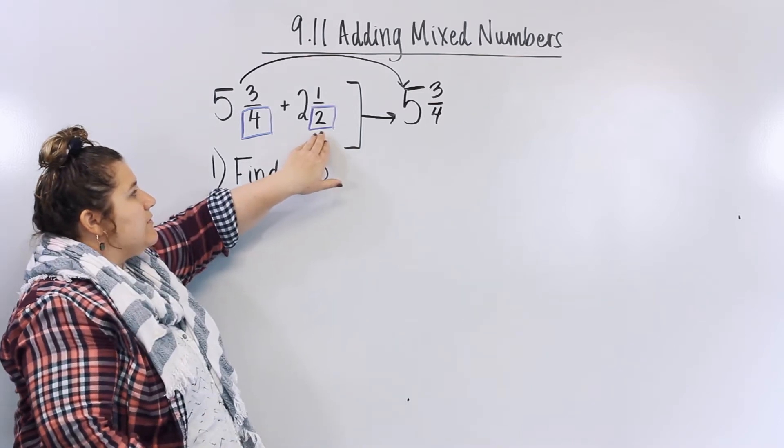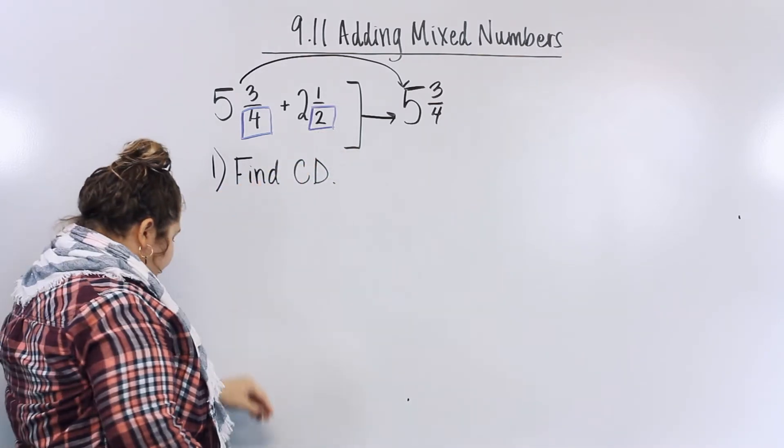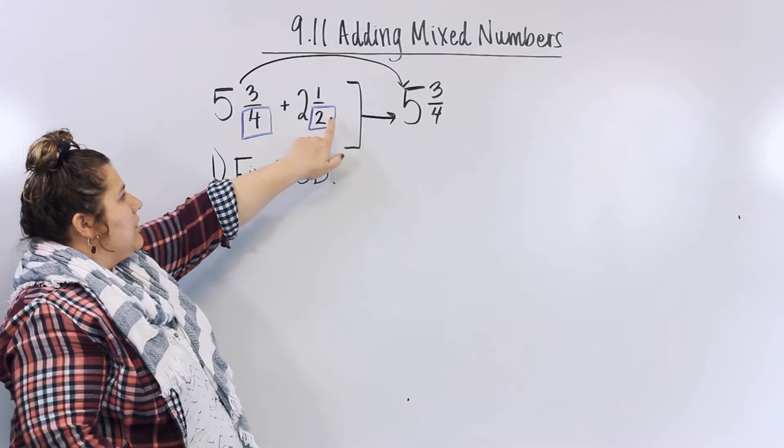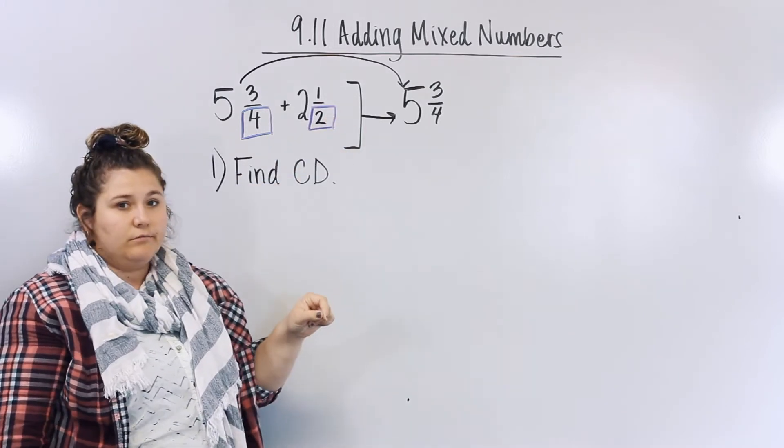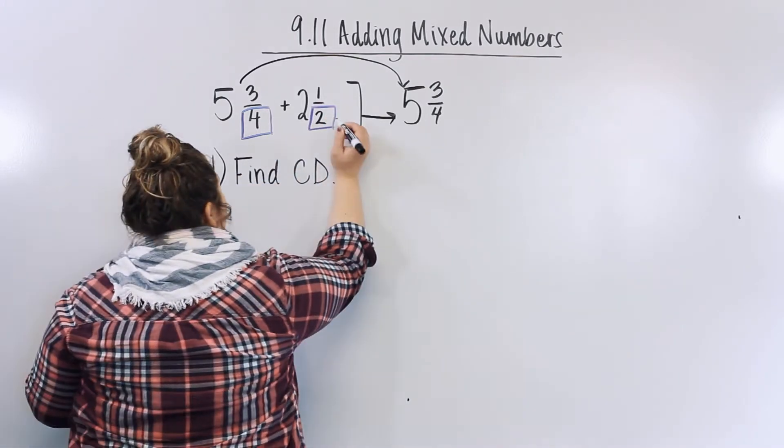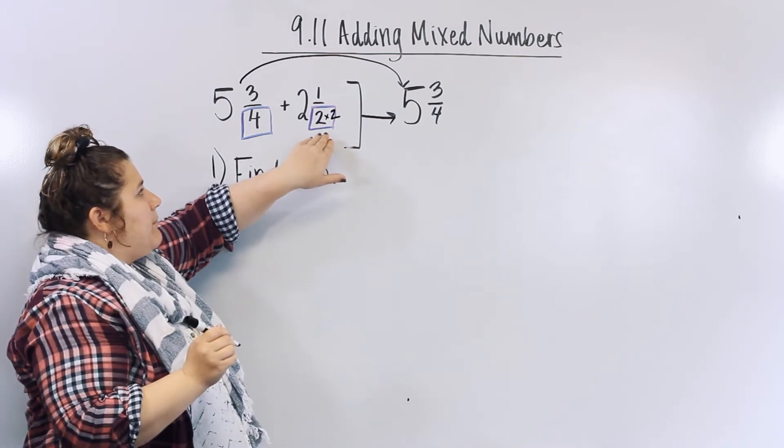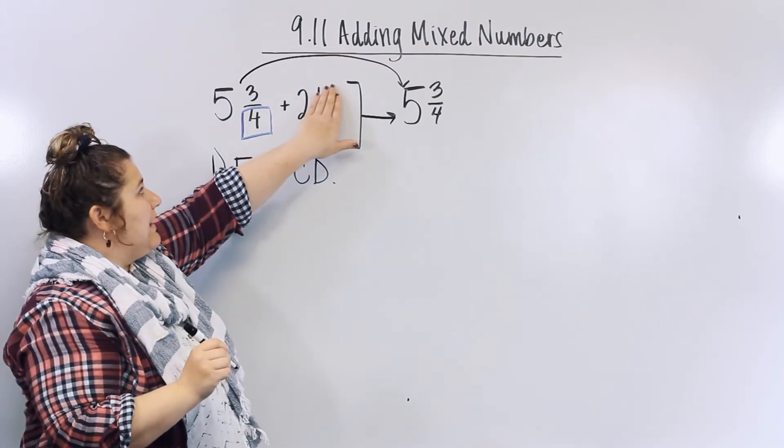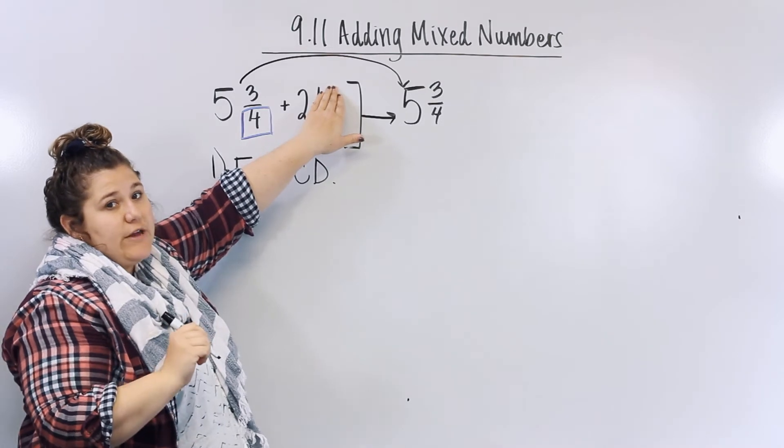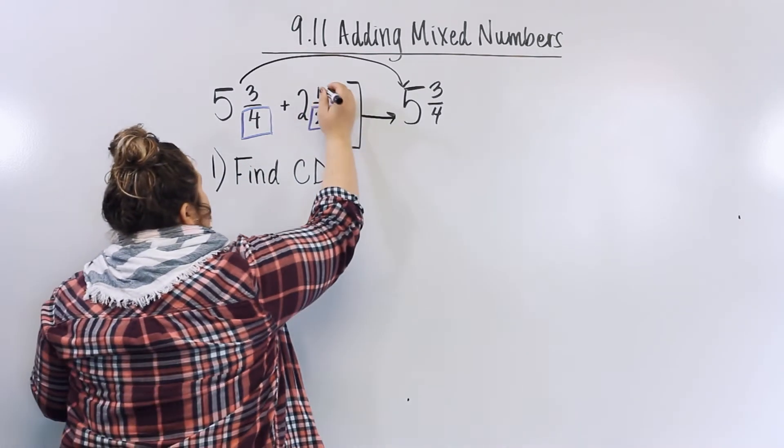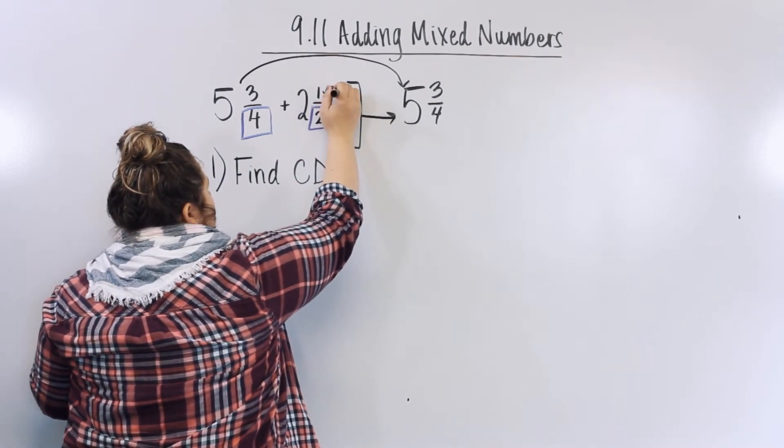Now, if I'm going to use 4 as my common denominator, what number times 2 equals 4? 2. So I'm going to multiply right here. And whenever I do to the bottom, I have to do the top. I have to do it to the numerator as well. So I'm also going to multiply by 2.